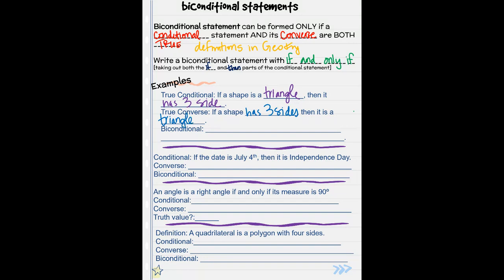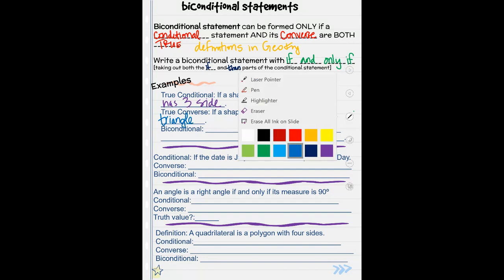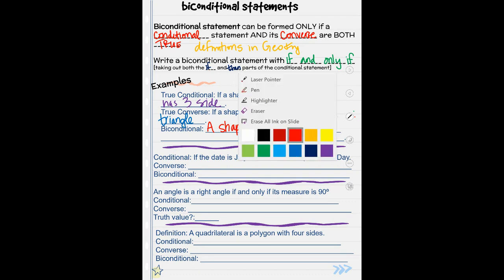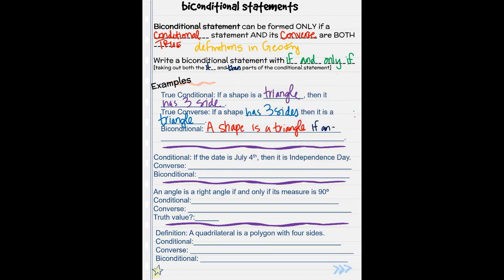So since both of these are true, we can write our biconditional. So what we're going to say is a shape is a triangle - see how I took out my if - triangle is where I add if and only if. See I took out my then and I added in if and only if it has three sides.